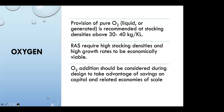Moving into oxygen: provision for pure oxygen — either liquid or generated — is recommended for higher stocking densities, anything above 30 to 40 kilograms per cubic meter, though I've seen as high as 50 before going to pure oxygen. RAS requires higher stocking density and high growth rate to be economically viable, and O2 addition should be considered in earlier design stages to take advantage of economies of scale.